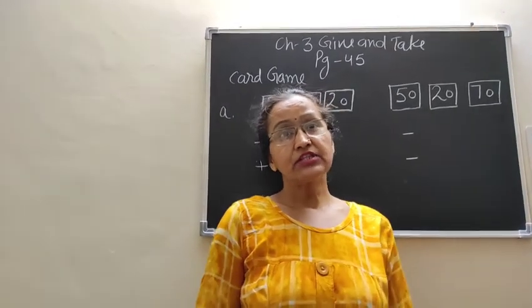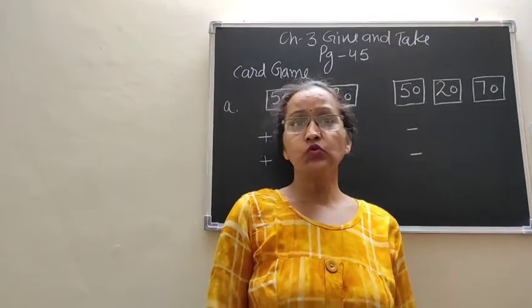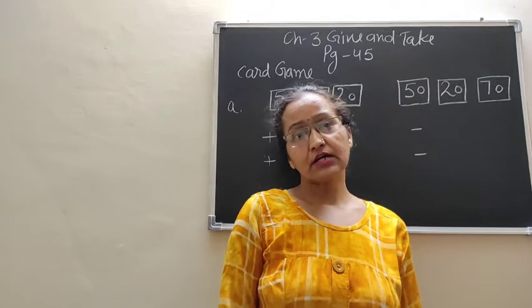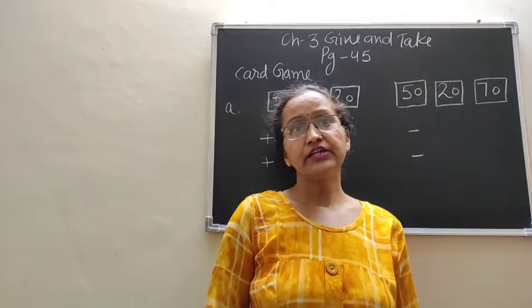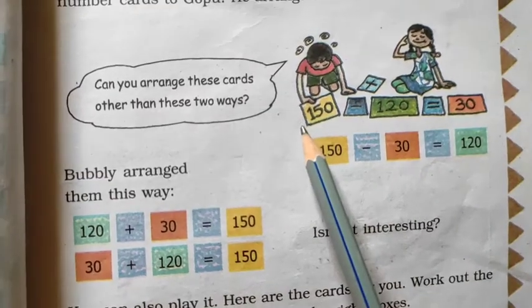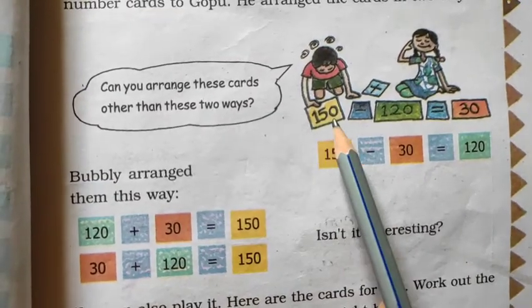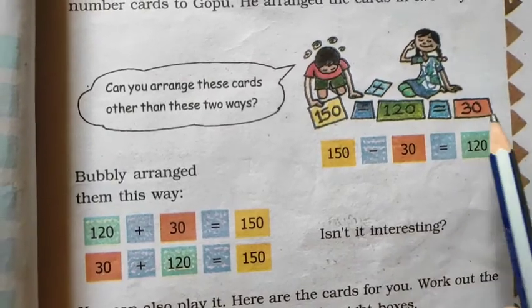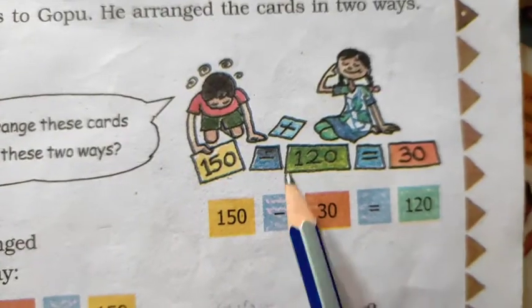Bubli gave 3 cards to Gopu. He arranged the cards in 2 ways. Here are the 3 cards: 150, 120, and 30.